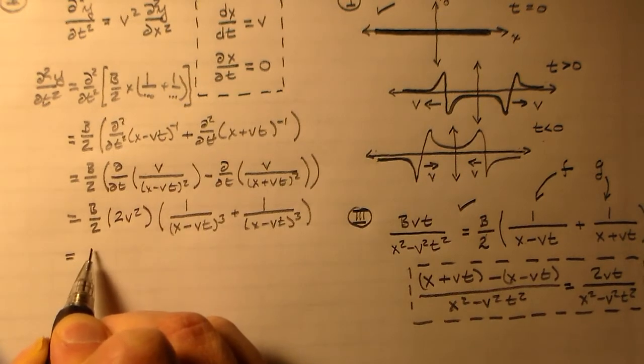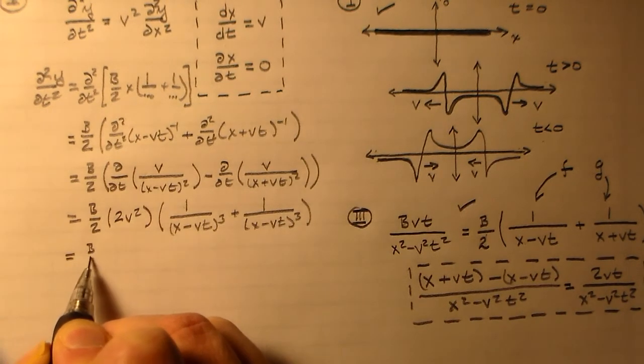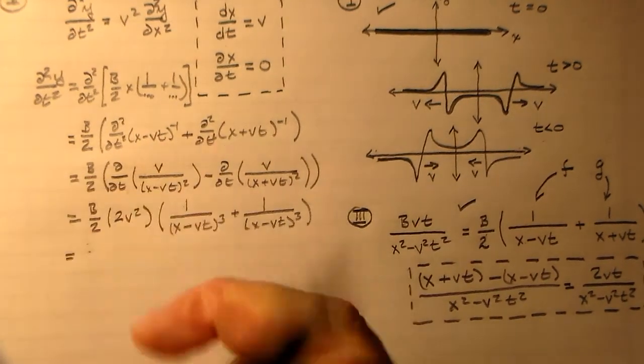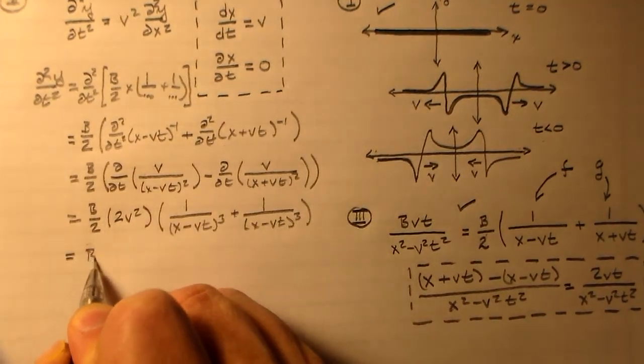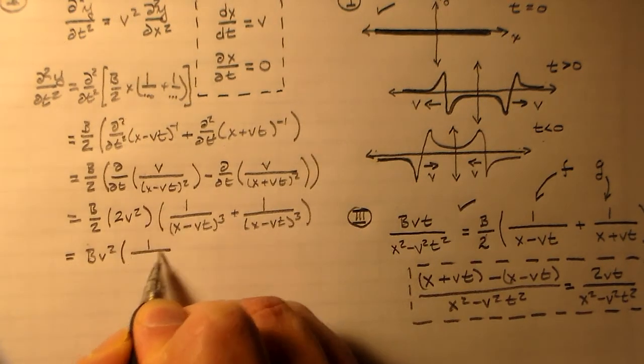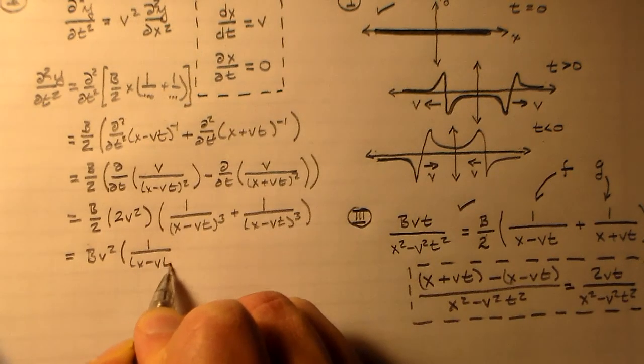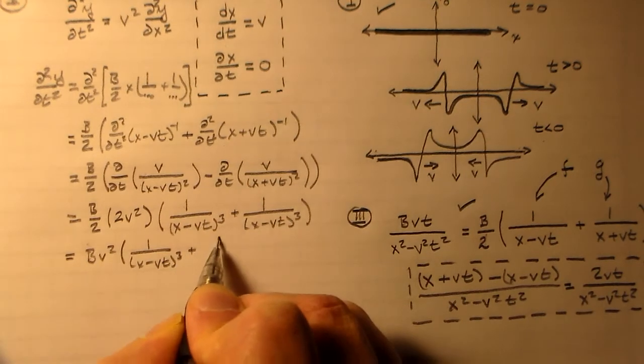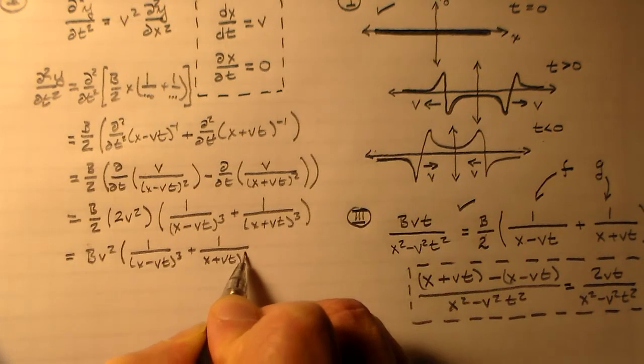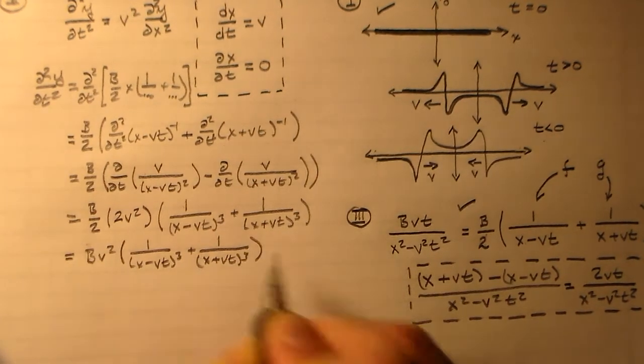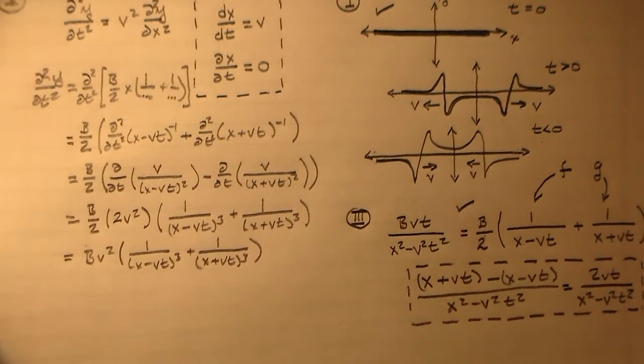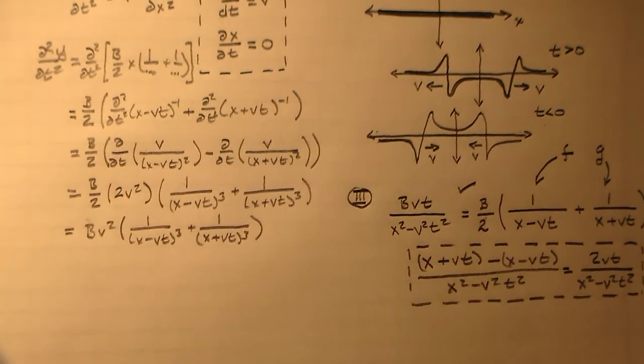And we can rationalize that all we want, which is bv squared times 1 over x minus vt cubed, plus 1 over x, that's a plus, plus vt cubed. Okay. And everything's looking okay for all that.